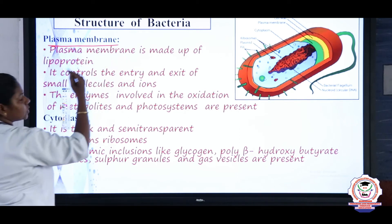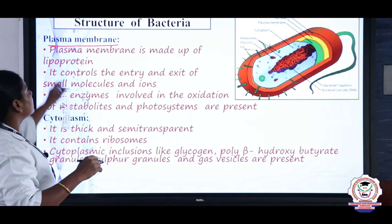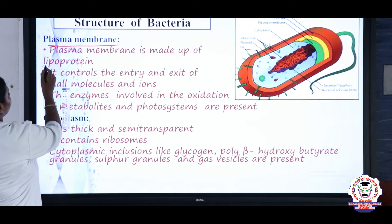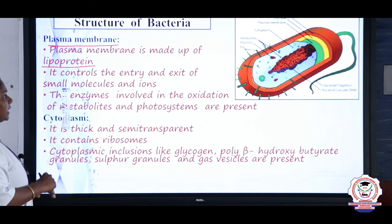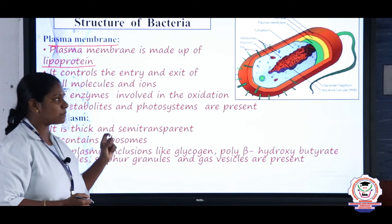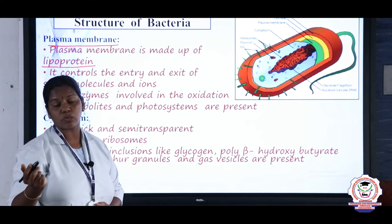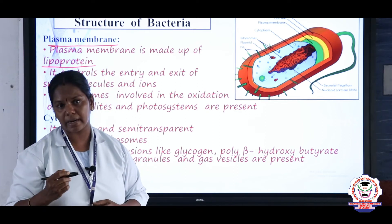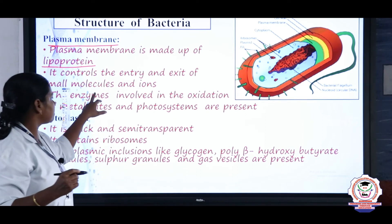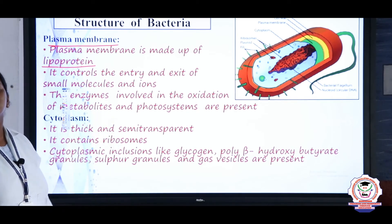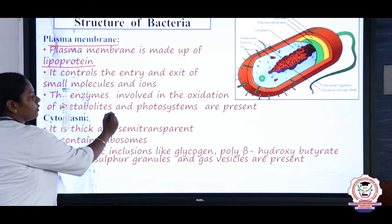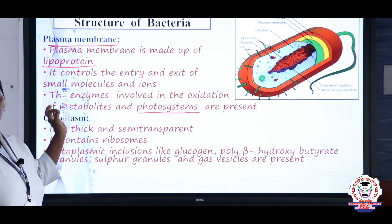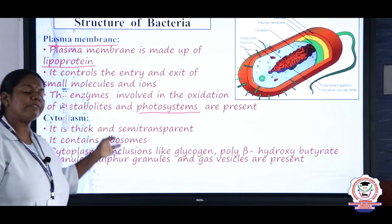Inner to the cell wall is the plasma membrane, made up of lipoprotein — a mixture of lipids and protein. The plasma membrane controls the entry and exit of molecules into and out of the bacterial cell. The enzymes produced by the plasma membrane are responsible for oxidation, metabolism, and photosystems — all enzymes necessary for cellular functions are present here.